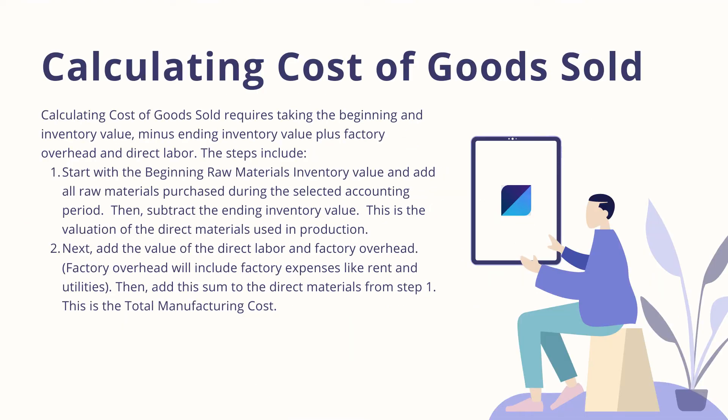Calculating Cost of Goods Sold requires taking the beginning inventory value minus ending inventory value, plus factory overhead and direct labor. Step 1: Start with the beginning raw materials inventory value and add all raw materials purchased during the selected accounting period. Then subtract the ending inventory value. This is the valuation of the direct materials used in production.